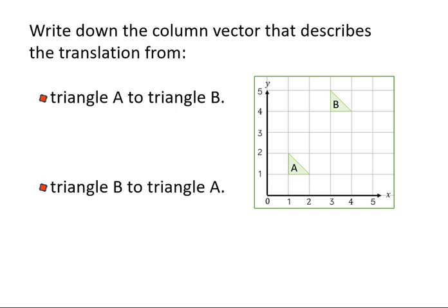So what I'd like you to do is think about, and if you have a pen and paper, write down the column vector that describes the translation from triangle A to triangle B. And then have a think about the transformation to get from triangle B to triangle A. What's similar and what's different between the two?